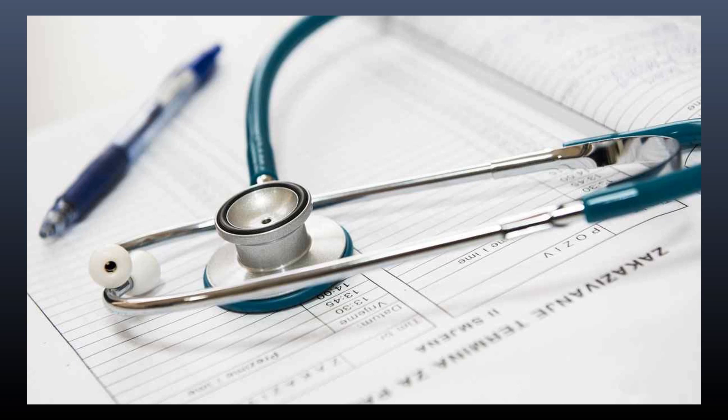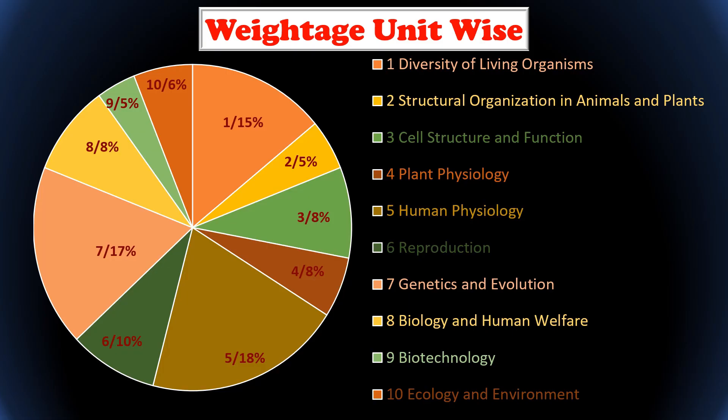Watch this video until the end because at the end we will discuss the actual study order. First of all, we have 10 units in our NEET biology syllabus. Initially there were 38 chapters including class 11 and class 12 — 22 chapters in class 11 and 16 in class 12 — but after the syllabus reduction for NEET we now have only 32 chapters. I have analyzed the previous five years of questions.